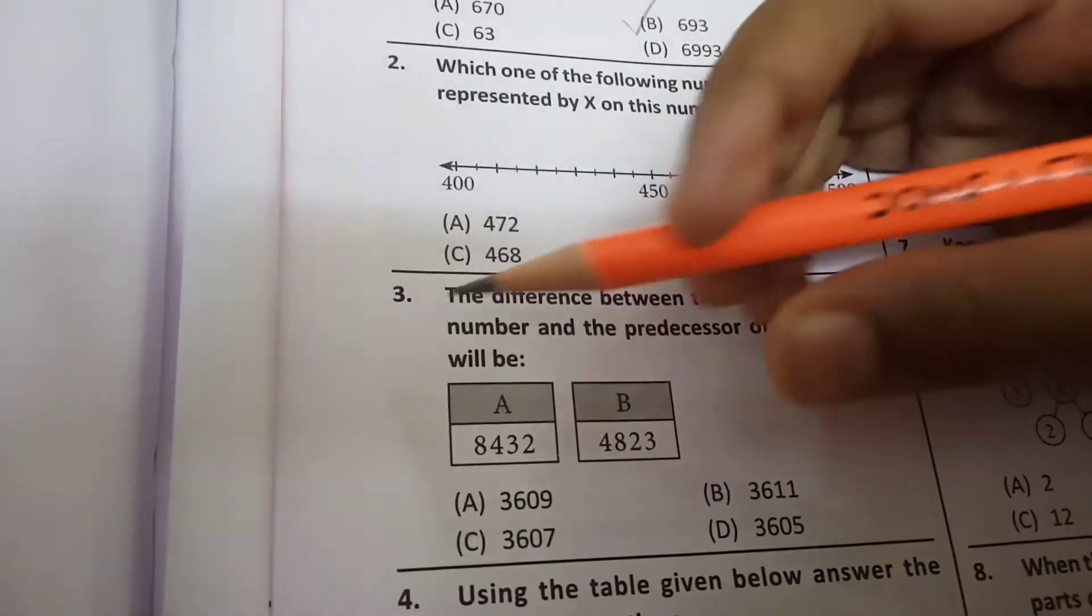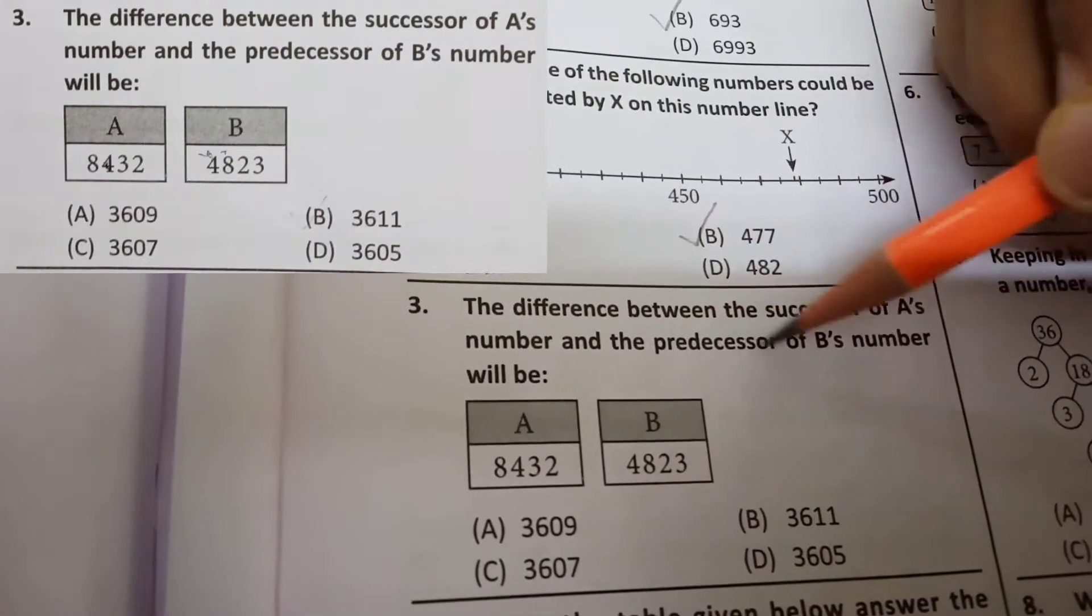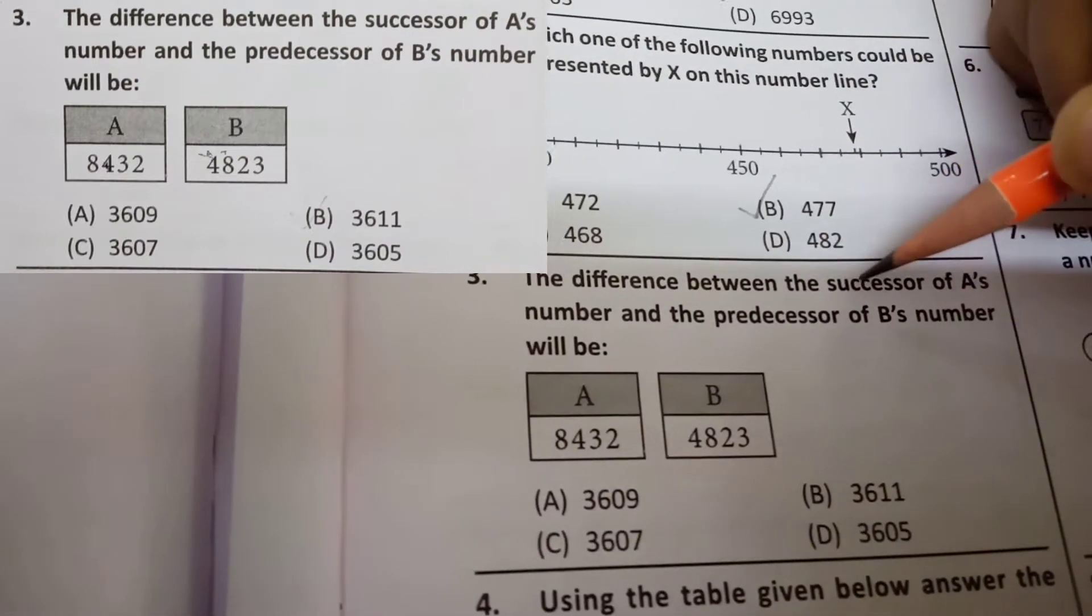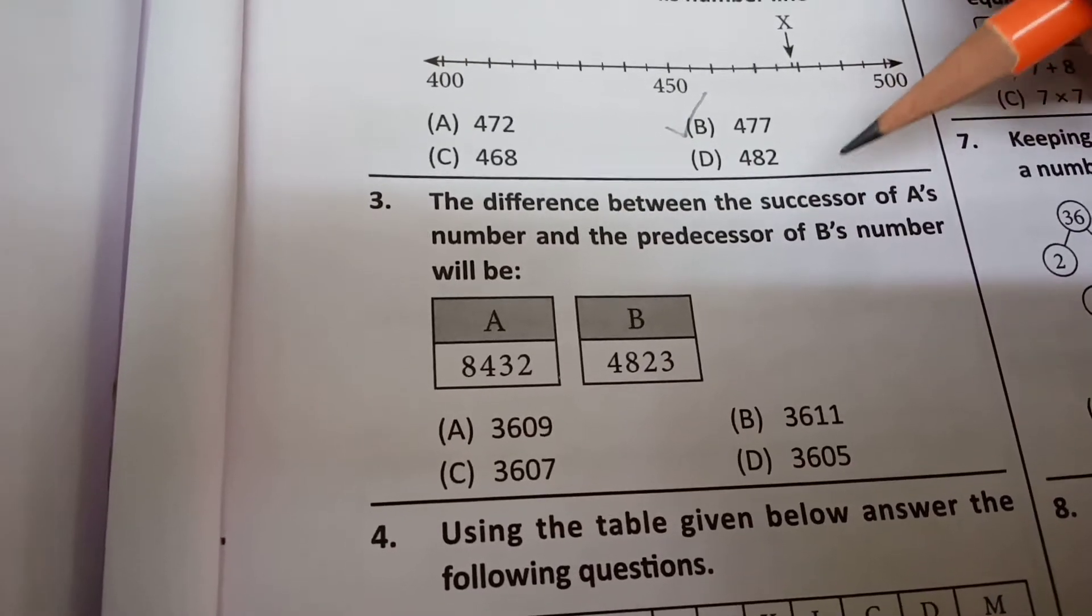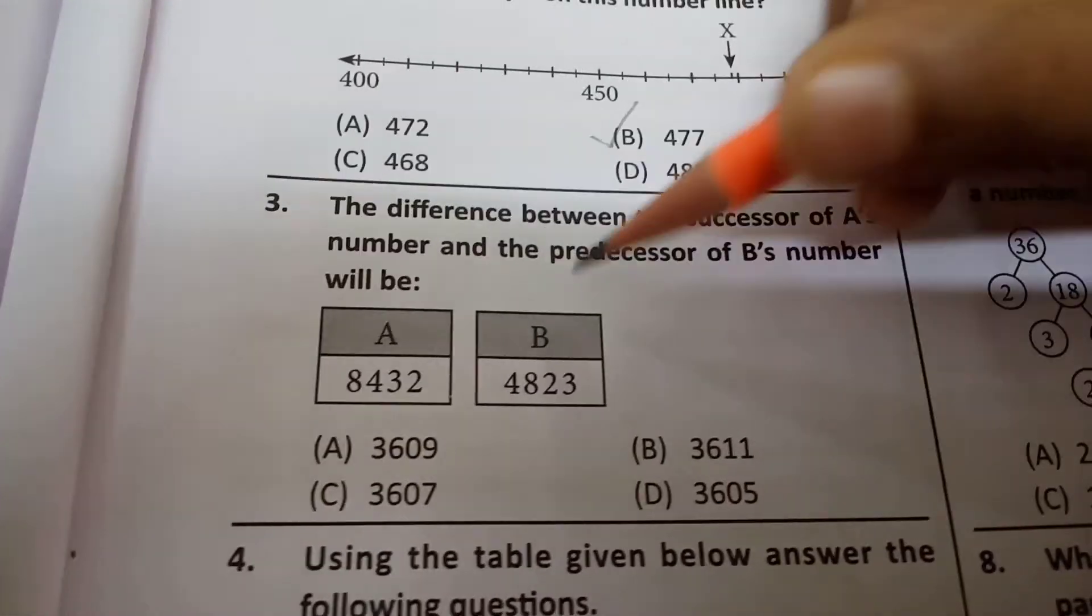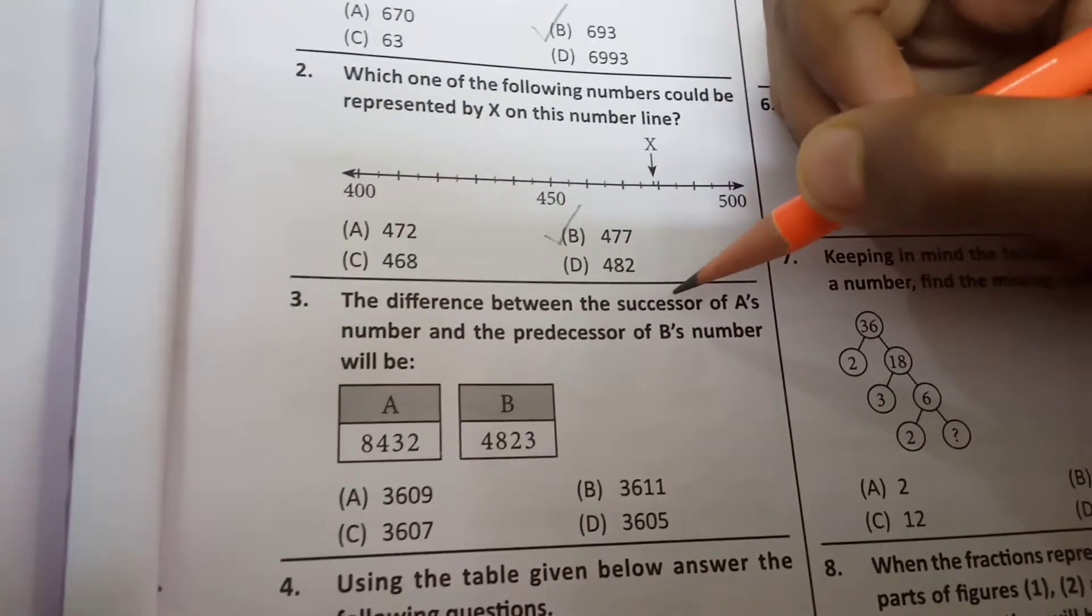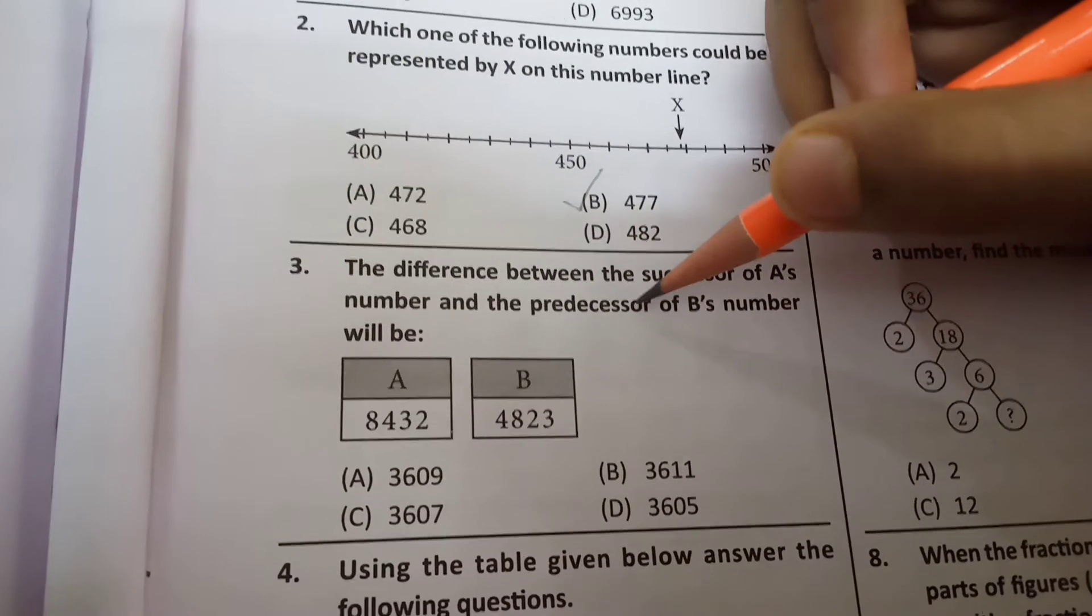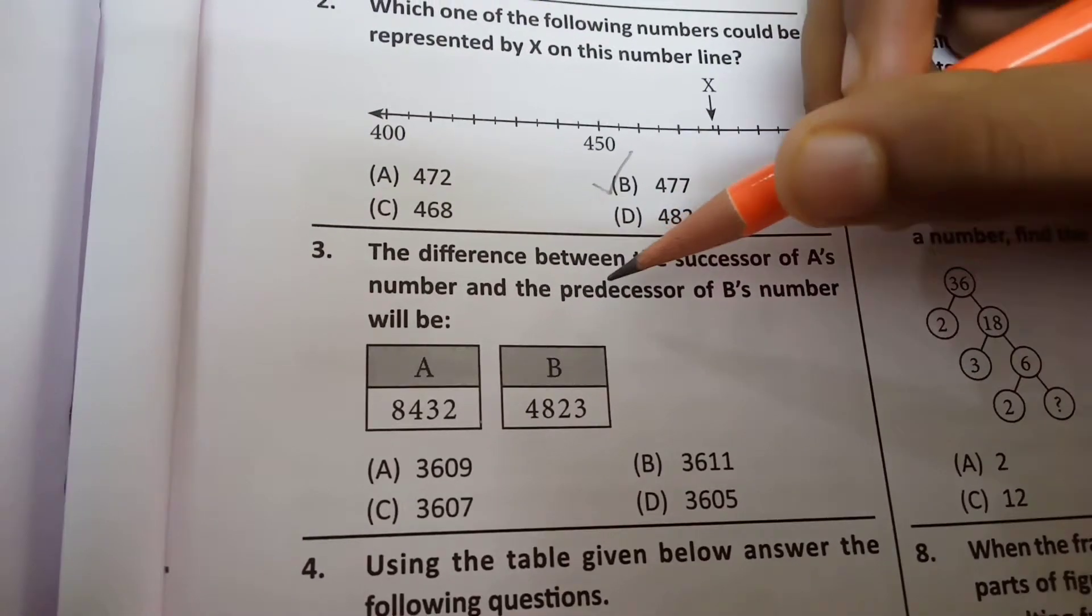Now the next question. The difference between the successor of A's number and the predecessor of B's number will be what? So first we need to know what successor and predecessor means. Successor means a number that comes right after a given number, and predecessor means a number that comes right before a given number.